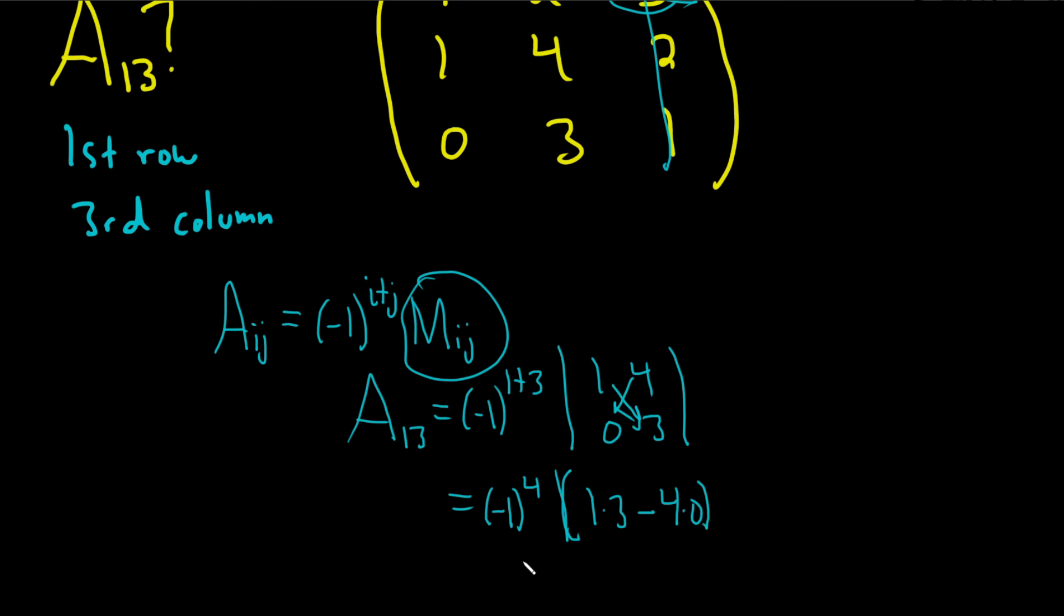Negative 1 to an even power is 1, so this is just 1. And 3 minus 0, and so we just get 3. So that would be the cofactor of the entry in the first row, third column. I hope this video has been helpful.